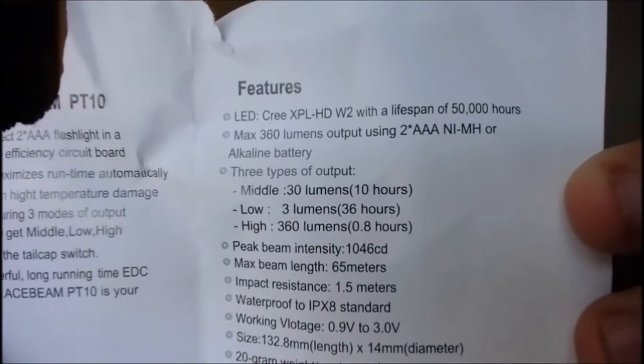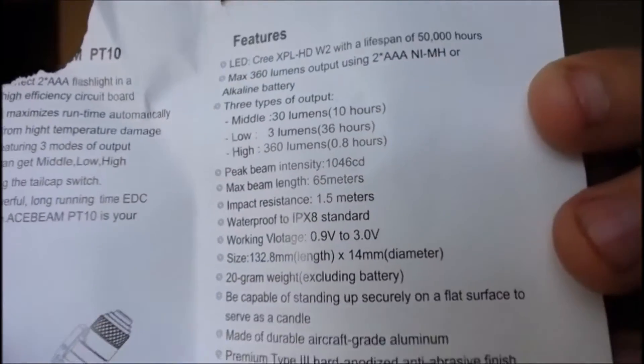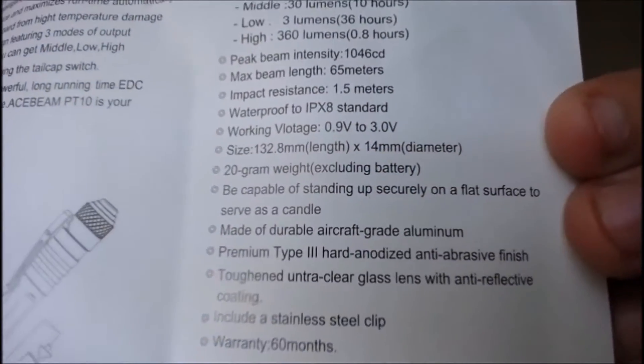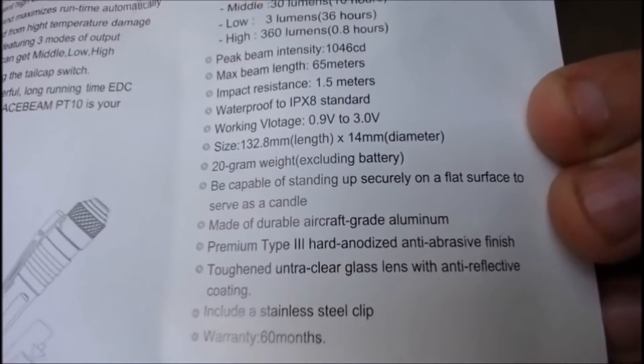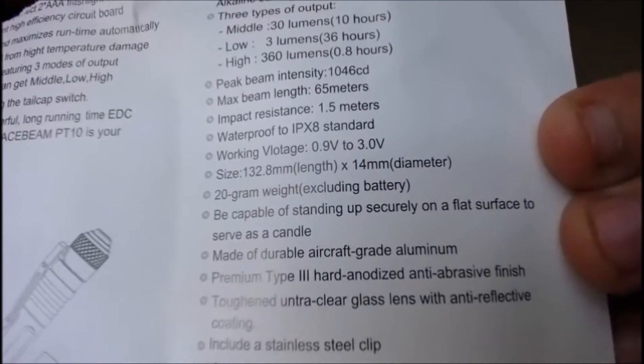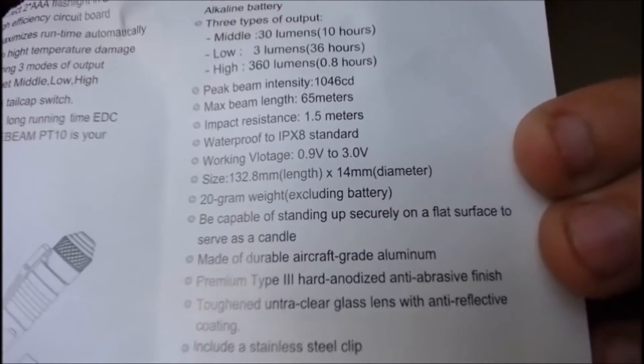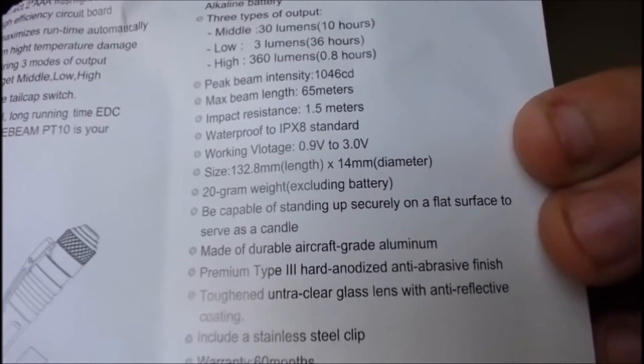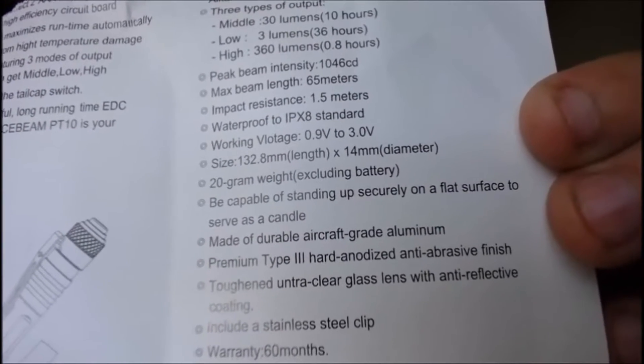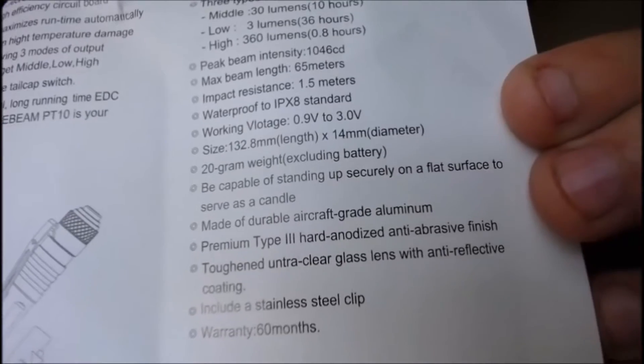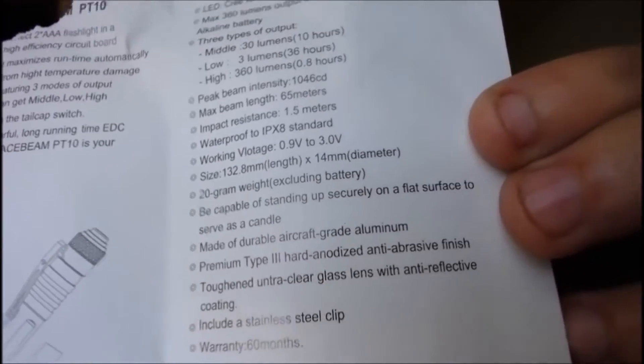It gives you all the specs about the flashlight, the lumen output, the working voltage, and it's made out of type 3 anodized aluminum. Let's get to it.